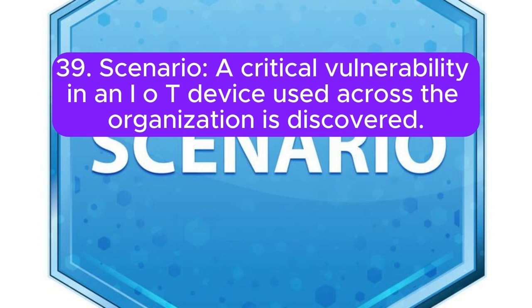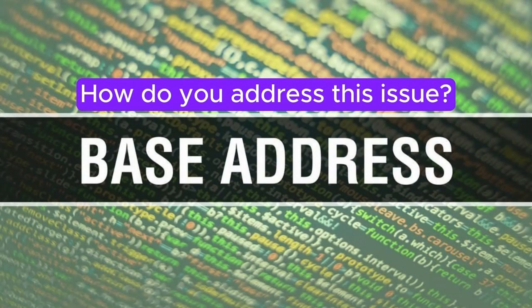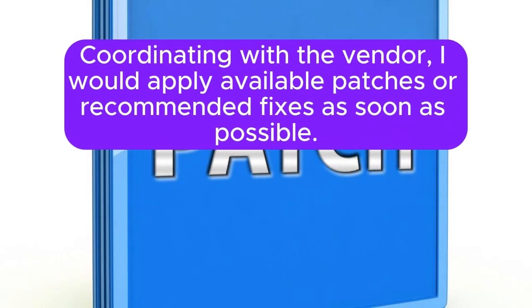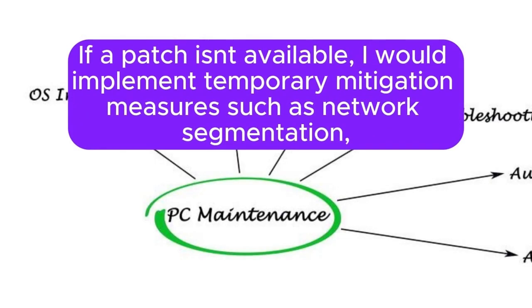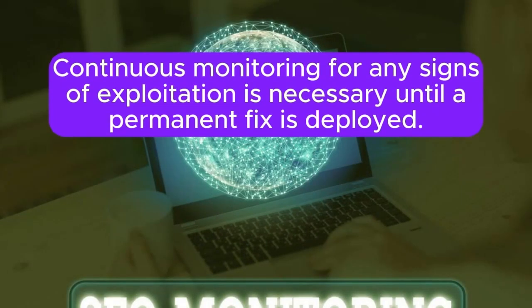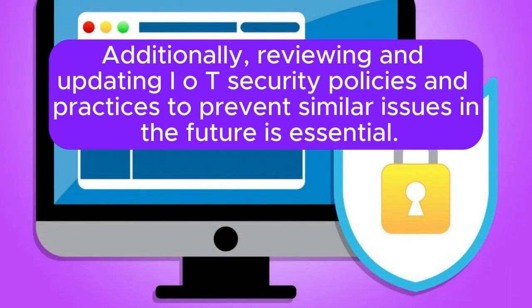Scenario 39: A critical vulnerability in an IoT device used across the organization is discovered. How do you address this issue? I would identify all instances of the vulnerable IoT device and assess the impact of the vulnerability. Coordinating with the vendor, I would apply available patches or recommended fixes as soon as possible. If a patch isn't available, I would implement temporary mitigation measures such as network segmentation, access restrictions, or disabling vulnerable functionalities. Continuous monitoring for any signs of exploitation is necessary until a permanent fix is deployed. Additionally, reviewing and updating IoT security policies and practices to prevent similar issues in the future is essential.